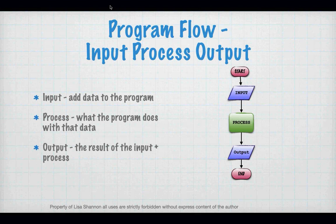So what is a program? Well, a program is really three basic steps. You have input, process, and output. Input is where you add data to a program. Process is what you do with it — mathematical stuff, we're playing a game, I'm entering what my direction is. And output is you are providing information back to a user, back to another program. So those are the three basic steps.